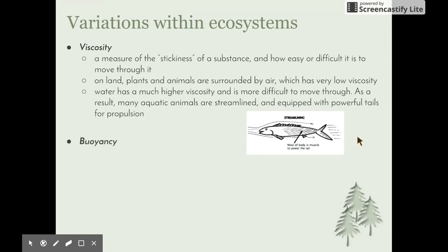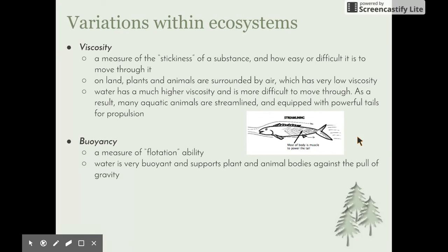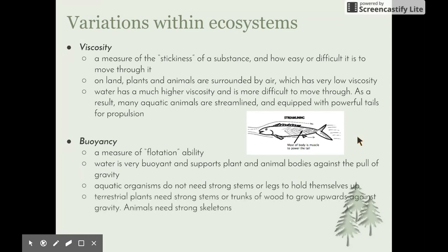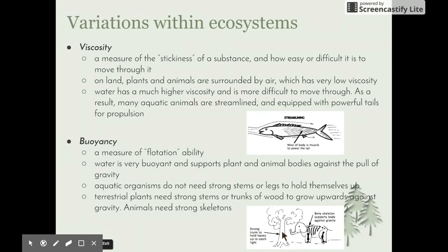The next abiotic factor is buoyancy — a measure of flotation ability. Water is very buoyant and supports plant and animal bodies against the pull of gravity, so aquatic organisms do not need strong stems or legs to hold them up. Terrestrial plants need strong stems or wooden trunks to grow upwards against gravity, and animals need strong skeletons. A tree has a substantial trunk to hold the weight of its leaves, plus an extensive root system to remain upright. Animals like elephants have a bony skeleton to support them against gravity — without a skeleton, they'd simply be a puddle on the ground.